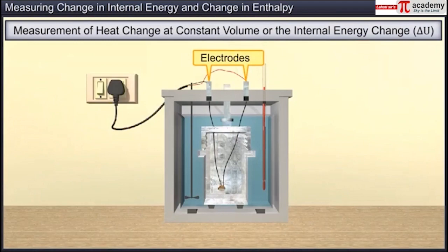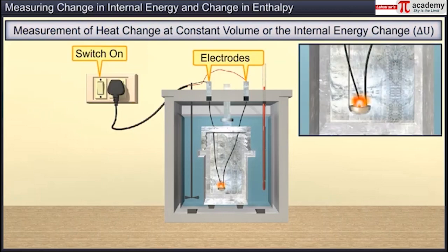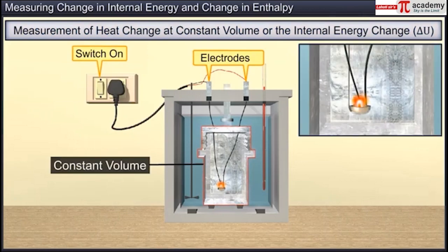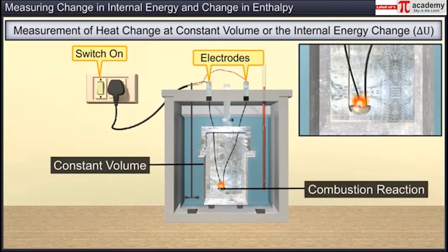Let us first discuss the measurement of heat change at constant volume, or the internal energy change, delta U. The reactions most easily studied under constant volume conditions are combustion reactions, and the apparatus used for this purpose is called the bomb calorimeter.